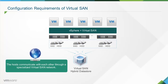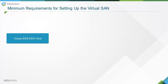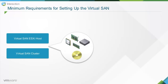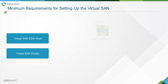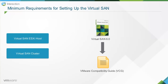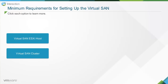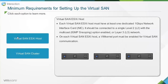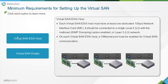The hosts communicate with each other through a specialized Virtual SAN network. Each Virtual SAN ESXi host must have at least one dedicated 1 Gbps network interface card or NIC, connected to a single Layer 2 network with multicast IGMP snooping enabled, or a Layer 3 network. On each Virtual SAN ESXi host, a VMkernel port must be enabled for Virtual SAN communication.